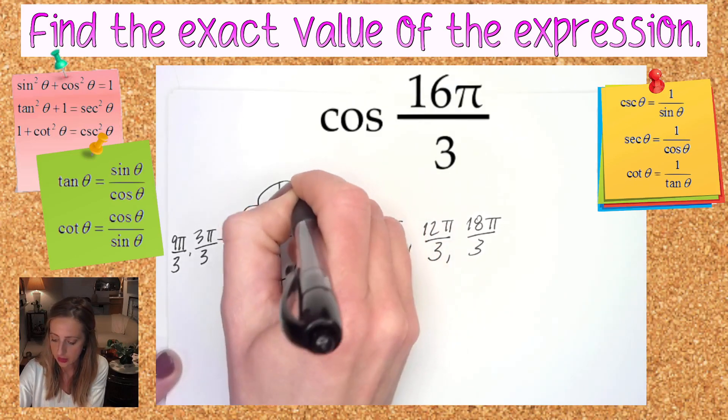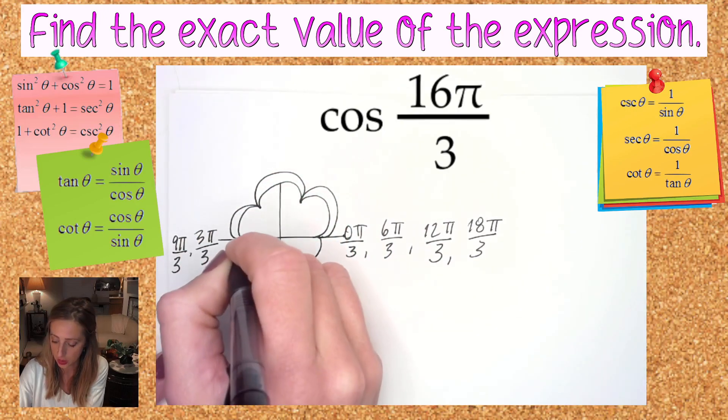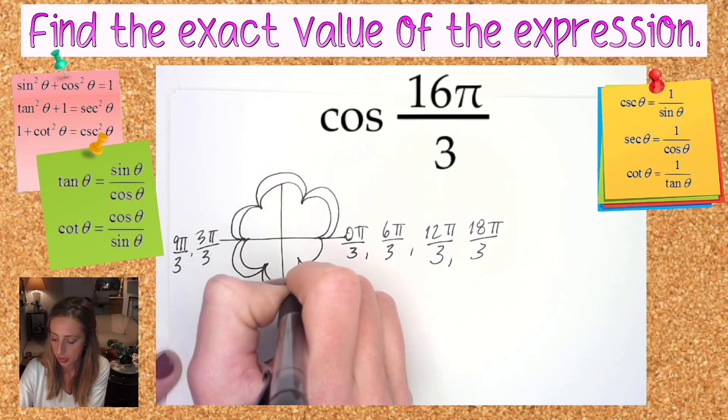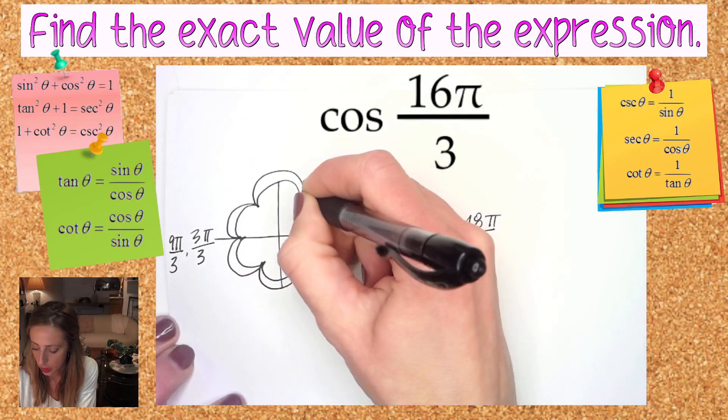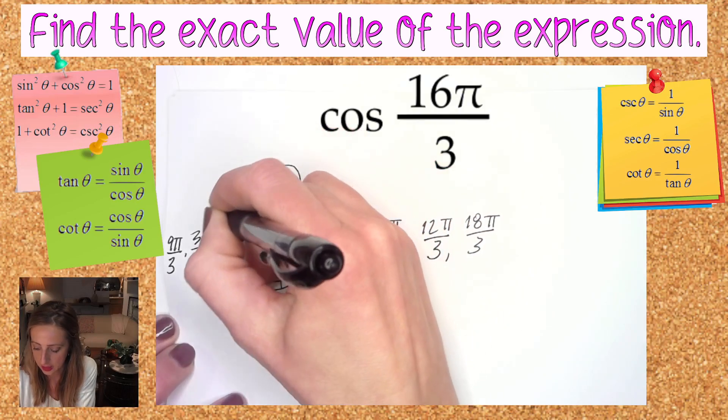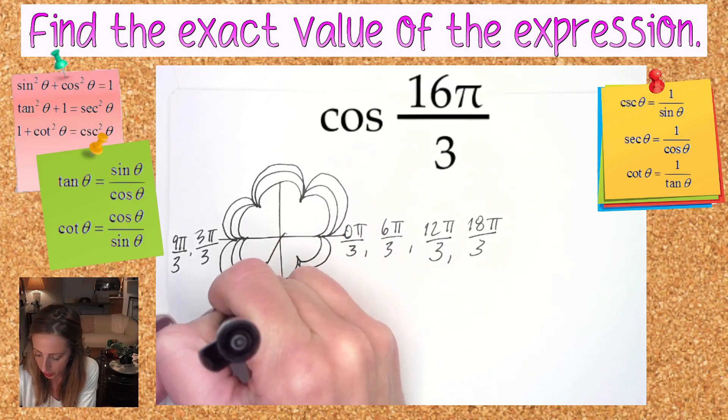So one, two, 3π over 3, four, five, 6π over 3. What a pretty flower, okay. Seven, eight, nine. This is ridiculous to count like this, but if you want to, okay. 10, 11, 12π over 3, sorry my hand is kind of in the way. 13, 14, 15, 16π over 3.